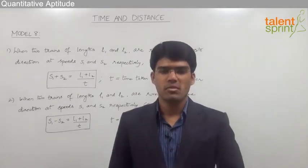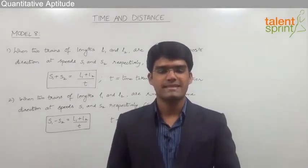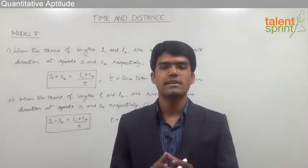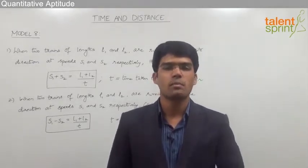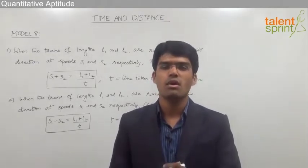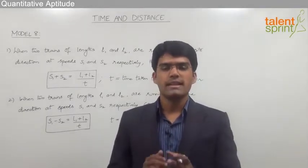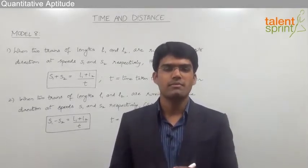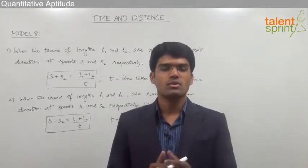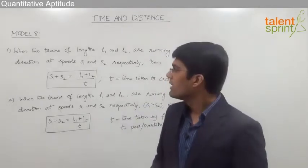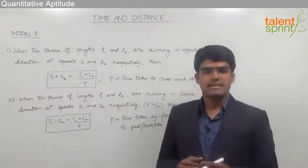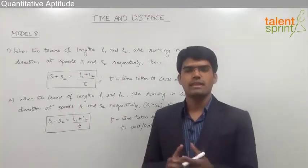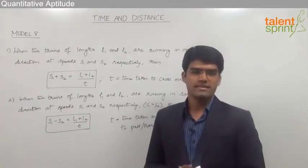Let us now discuss the 8th model from time and distance, where we are supposed to solve questions related to two trains either moving in opposite direction or moving in same direction. Let us first understand the basic equation that can be used for solving these type of questions. Here there are two possible cases: either two trains move in opposite direction or two trains move in the same direction.